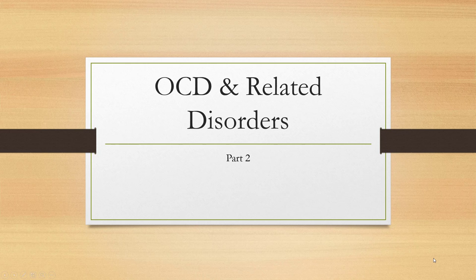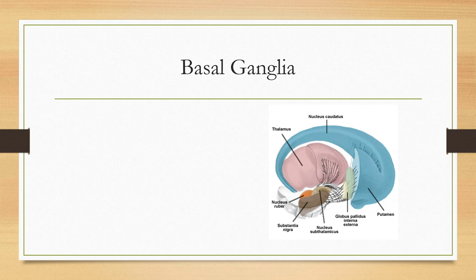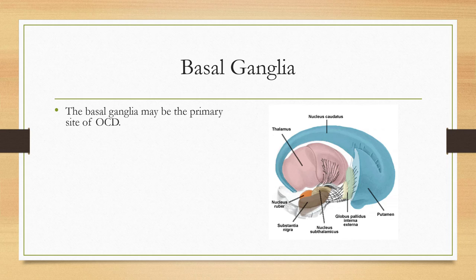Welcome back. This is part two of the obsessive-compulsive and related disorders lecture. We're going to look at the neurobiology involved in obsessive-compulsive and related disorders. We need to pay attention to the basal ganglia and understand how certain components of the brain are wired to have a better understanding of the obsessive-compulsive and related disorders component.